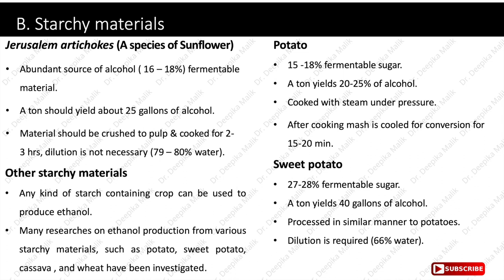A ton of potatoes yields 20 to 25 gallons of alcohol. They are cooked with steam under pressure, and after cooking, the mash is cooled for conversion into small fermentable sugars for 15 to 20 minutes. Sweet potatoes contain 27 to 28% fermentable sugars and a ton yields 40 gallons of alcohol. They are processed in a similar manner to potatoes, but dilution is required for sweet potatoes.